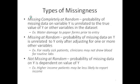But the most tricky one is not missing at random. This means that the probability of missing data on Y is dependent on the value of Y itself. For example, if you're asking a group of patients what their income is and those who make a higher income may be less inclined to disclose their income, then you're going to have missing data concentrated in that higher income bracket more than anywhere else.